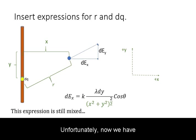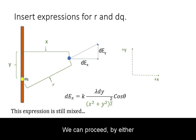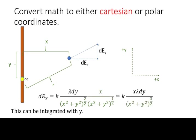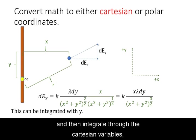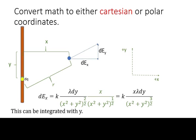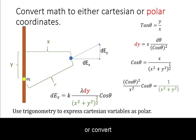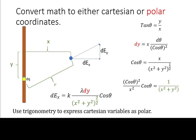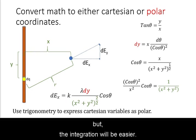We then substitute our expressions for differential charge and r into this component expression. Unfortunately, we now have mixed variables of Cartesian and polar nature. We can proceed by either converting polar variables into Cartesian ones and integrating in Cartesian, or converting Cartesian variables into polar coordinates. In this example, we will do the latter. This conversion may take more steps, but the integration will be easier.